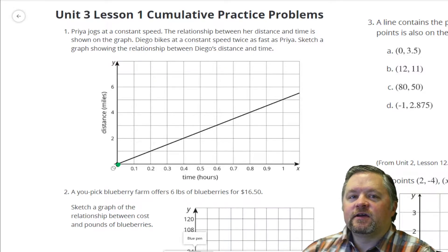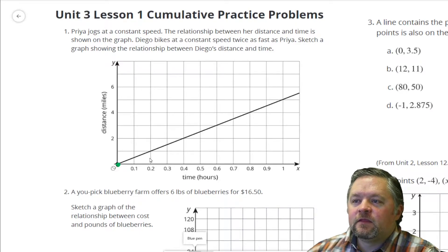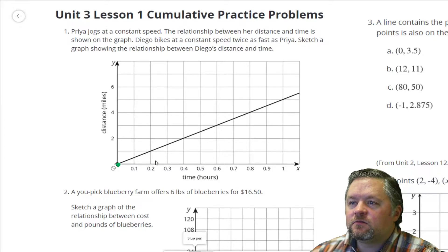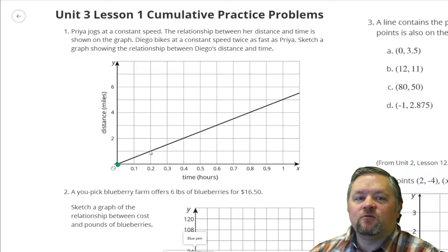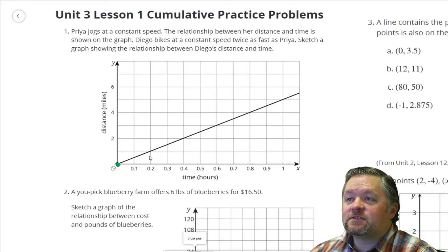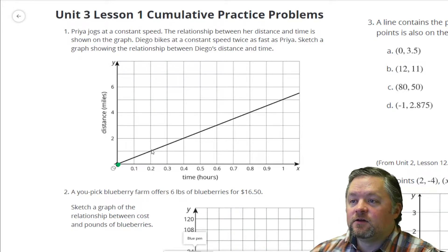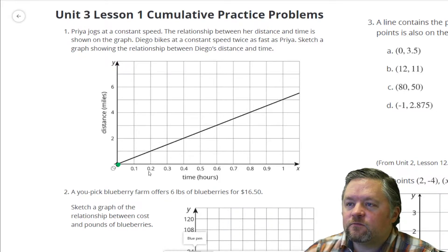Anytime I'm looking at something like this, I want to find nice points to work with. If in 0.2 hours, Priya has gone one mile, if Diego's going twice as fast, he will go twice as far. So in 0.2 hours, instead of going one mile, he'll go twice as fast.